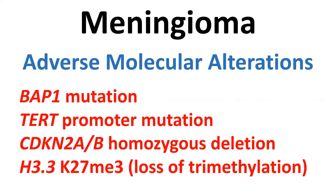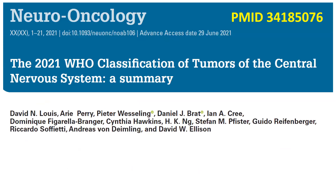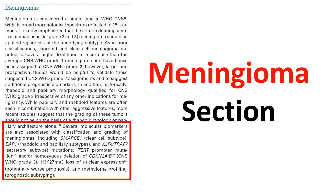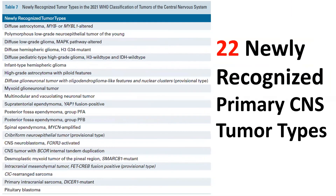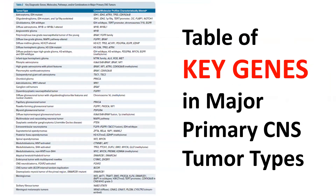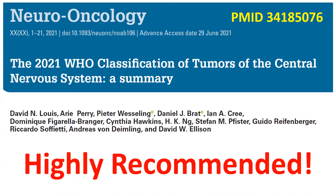These are the main four alterations associated with high grade. Let me talk about the forthcoming fifth edition of WHO classification. This is the paper that just came out this past month — this is the meningioma section. I just showed you a complete list of all CNS brain tumor entities over four pages long — twenty-two newly recognized primary CNS brain tumor entities over five pages. This is major. This is where we are today, and it's just a part of that table. Highly recommended — and this paper is free.